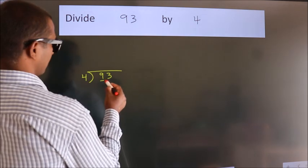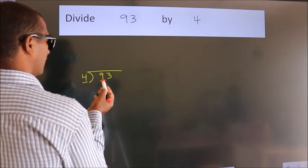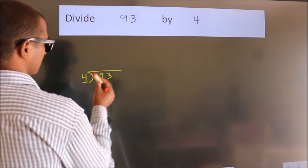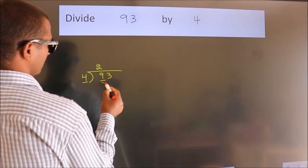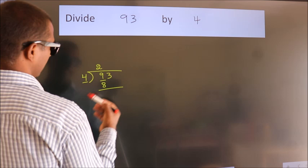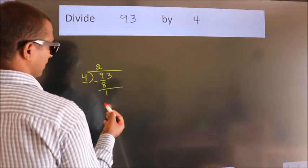Here we have 9. Here 4. A number close to 9 in the 4 table is 4 twos, 8. Now we should subtract. We get 1.